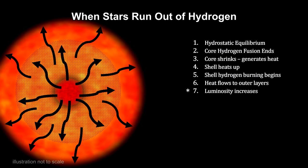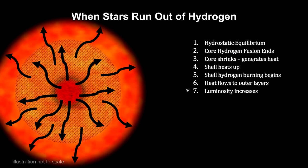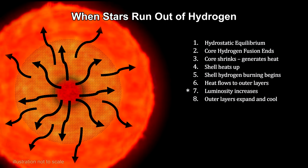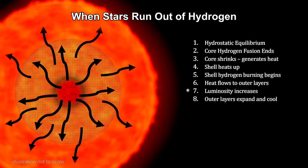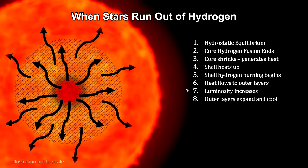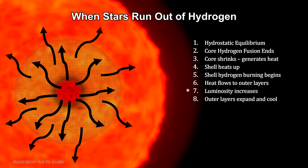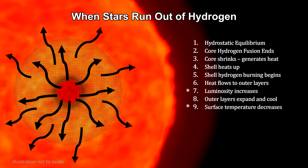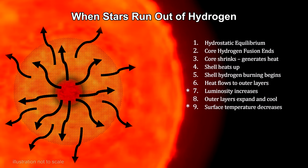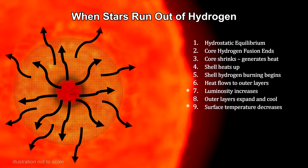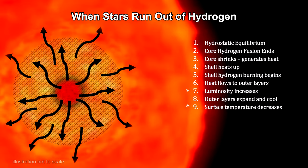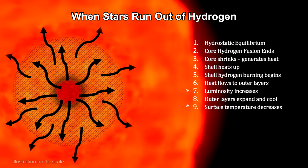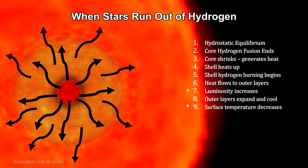The first observable result is an increase in the star's luminosity. With all the new energy pouring outward, the outer layers of the star begin to expand. The star eventually grows and grows until it reaches enormous proportions. The expansion of a star's outer layers causes the temperature at the surface to cool. Here we have the second major observable result. The star's surface temperature decreases. The star becomes simultaneously more luminous and cooler.